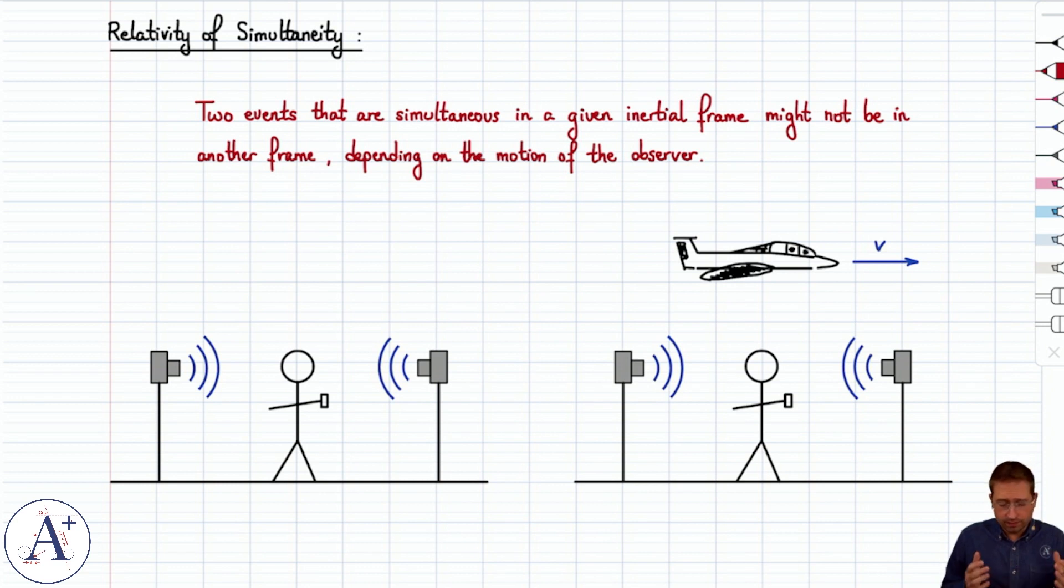In special relativity though, that's no longer true. Because you can have two events that are going to be simultaneous in a given frame that are not in another frame, and that depends on the motion of the observer.